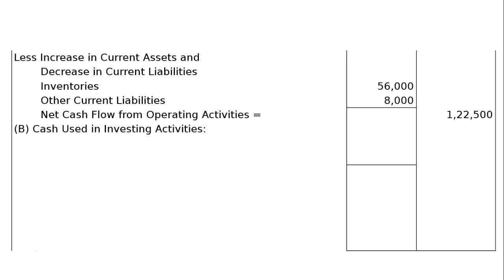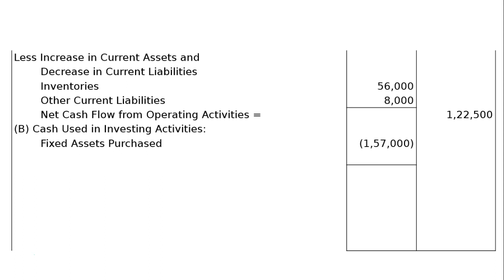Next, Part B: cash used in investing activities. Fixed tangible assets increased from ₹1,17,000 to ₹2,74,000 — so we purchased fixed assets worth ₹1,57,500, meaning cash went out. Also, non-current investment increased — we purchased long-term investments of ₹13,000, so cash went out. Adding ₹1,57,000 and ₹13,000 gives ₹1,70,000 net cash used in investing activities (minus). The net from operating was plus ₹1,22,000.